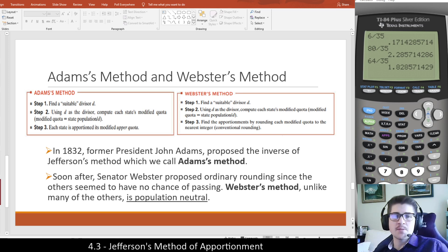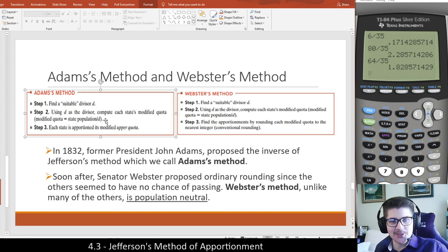If we look at Adams' method, it says step 1, find a suitable divisor. Step 2, using the suitable divisor, compute each state's modified quota. And step 3, each state is apportioned its modified upper quota. Notice everything about this is literally identical to Jefferson's method. The only difference is it uses the upper quota. So you round up instead of round down.